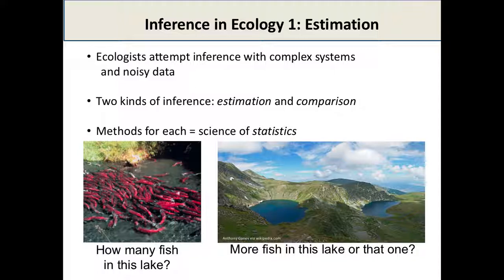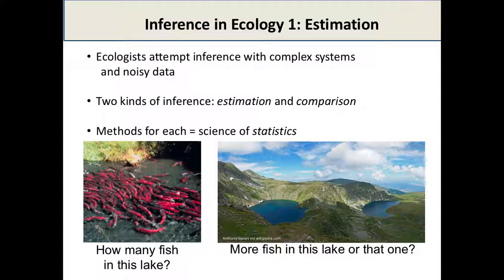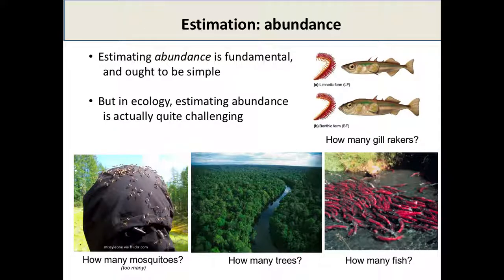That's what we're going to talk about in the next two lectures — how we make a measurement that we have confidence in as an ecologist. Today we'll talk about that, and on Wednesday we'll talk about how we compare different measurements. For example: how confident are we that this population has 23 individuals versus 15? First we need to be able to say how many there are — a simple question, but it can be a very difficult one to answer.